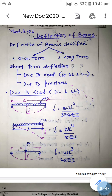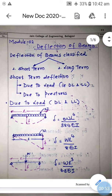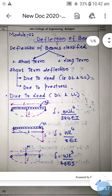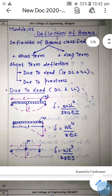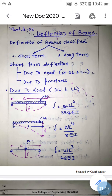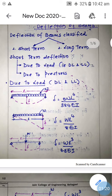Deflection of beams is mainly classified into two types: short-term deflection and long-term deflection. Short-term deflection is further classified into deflection due to dead load and live load, and deflection due to prestress. Short-term deflection occurs within a short duration after application of load — due to dead load and live load it will be a downward deflection. Deflection caused due to prestress will always be upward deflection, forming a camber in the beam.